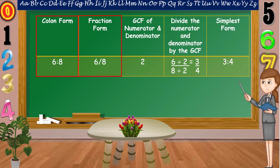To reduce a fraction or ratio to its lowest term, we are going to find the GCF, or the greatest common factor, of the numerator and denominator. The GCF of 6 is to 8, or 6/8, is equal to 2. We use this GCF as the divisor to reduce the fraction to its lowest term.